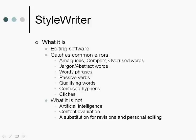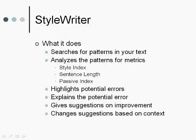Also it's not a substitution for revisions and your own personal editing. Now what it does — again it searches for patterns in your text and analyzes those patterns for certain metrics. The first one is a style index, which we'll go into at length. Your sentence length, which is obviously how long a sentence is. And then your passive index, which is how many passive sentences you have. It highlights potential errors, explains them, and gives suggestions based on the context in which you're writing — legal, advertising, and so on.